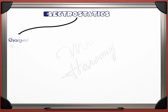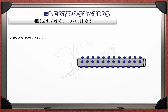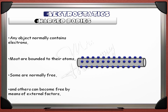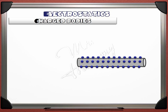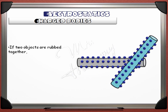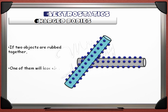Let's start with talking about charged bodies. Any object normally contains electrons in their atoms. Most are bonded to their atoms. Some are normally free, like those in metals, and others can become free by means of external factors. If two objects are rubbed together, one of them will lose electrons and the other gains electrons.